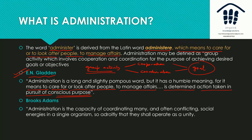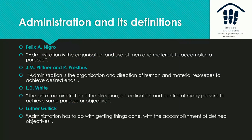There is an exact conscious purpose behind administration — take demonetization as an example. Brooks Adams says administration is the capacity of coordinating many, often conflicting, social energies in a single environment so that despite different interests, people operate as a unit. Felix Nigro says administration is the organization and use of men and materials to accomplish a purpose.